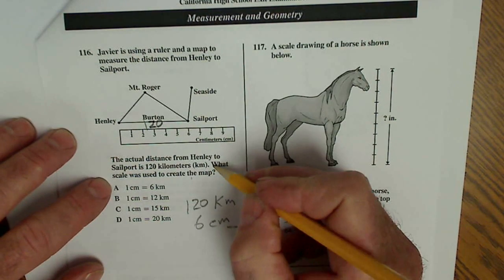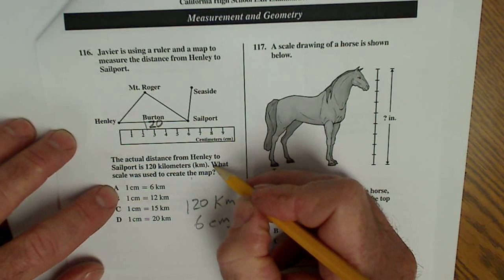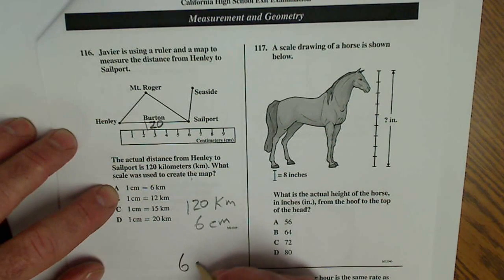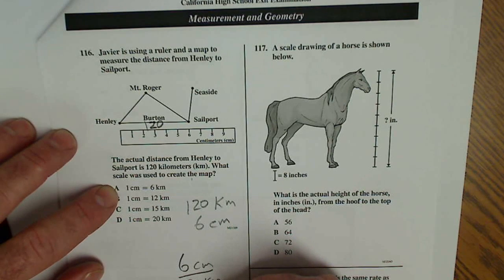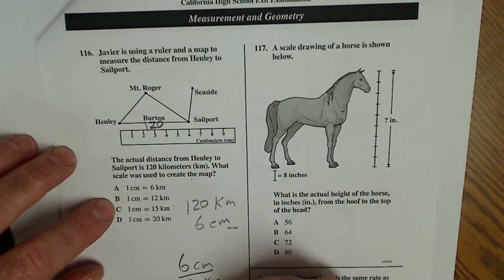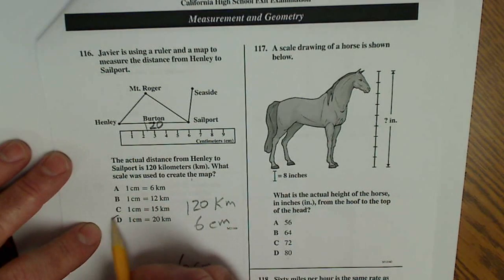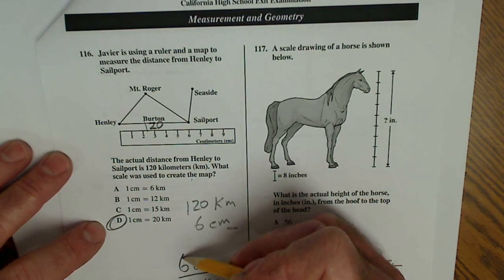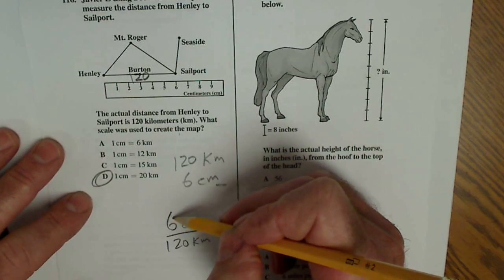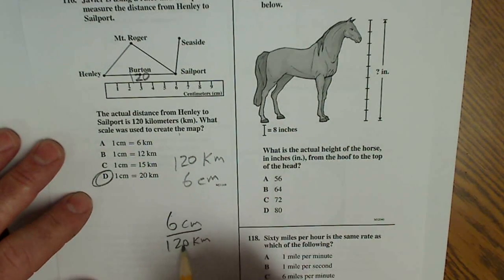Well, if I travel 120 kilometers in six centimeters, how much is that going to work out to be, how much is one centimeter equal to? So I have six centimeters equals 120 kilometers. So one centimeter is going to work out to be 20 kilometers. Let me check that. 20 times six. That's 20 times six gives me the 120 kilometers.